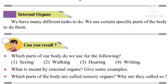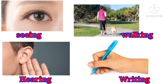Which parts of our body do we use for the following? First, seeing. Second, walking. Third, hearing. And fourth, writing. For seeing, we use our eyes. For walking, legs. For hearing, ears. And for writing, hands.